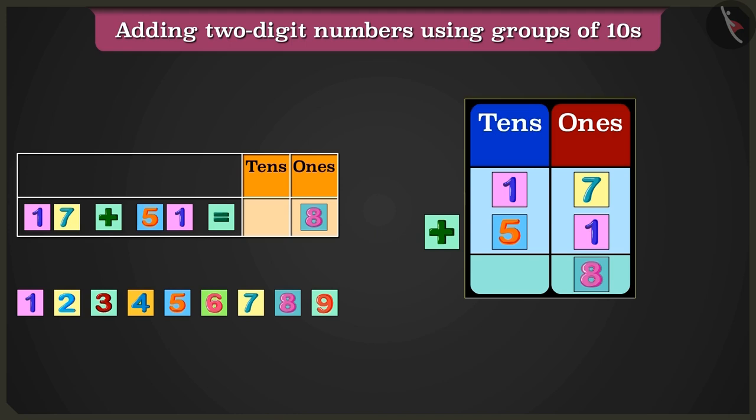Now, we will add the numbers in the box of tens. So, 1 ten added to 5 tens will equal 6 tens. Now, we will write 6 in the tens place.